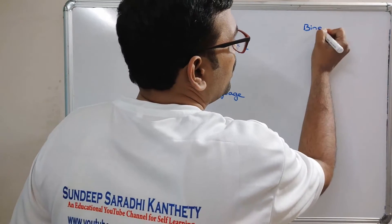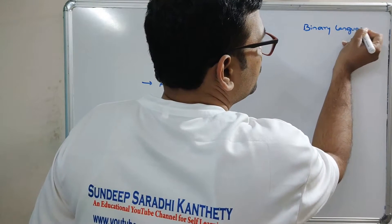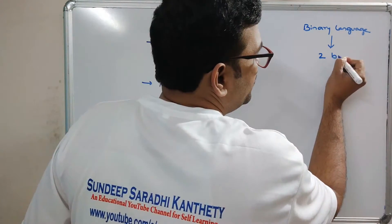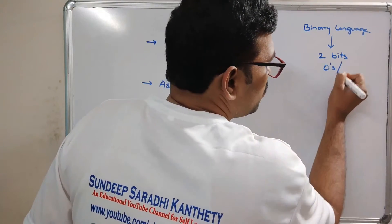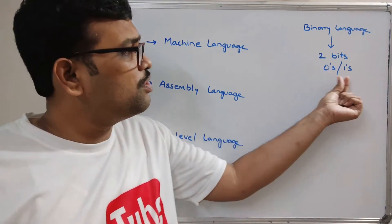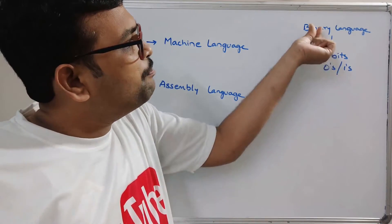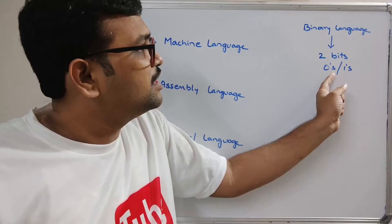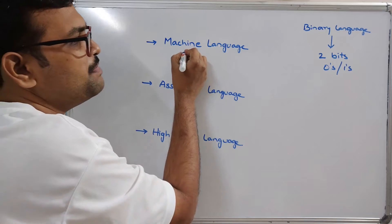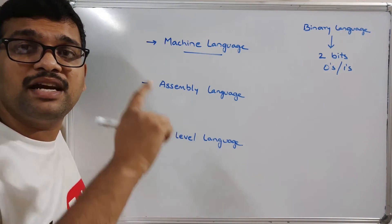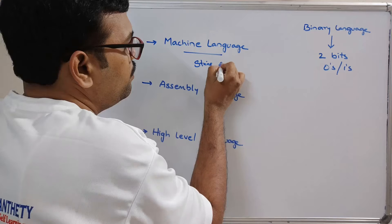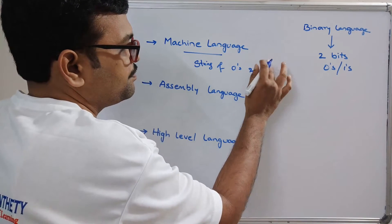The system can understand only the binary language. Binary language means anything should be represented in two bits — the combination of two bits, that is zeros or ones. Whatever instructions we are giving, those instructions will be represented in terms of either zeros or ones. That's why we call it a binary language, and the same thing we call the machine language — the language which can be understood by the machine, which is a string of zeros and ones.